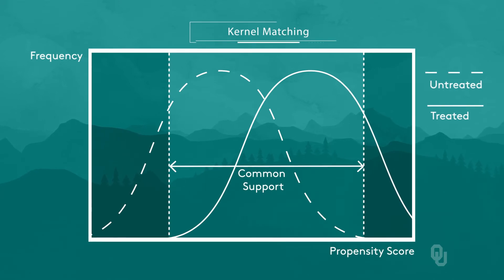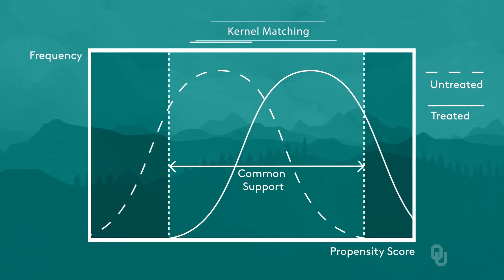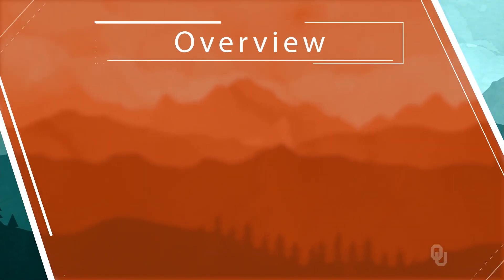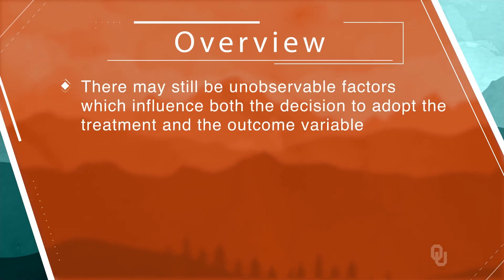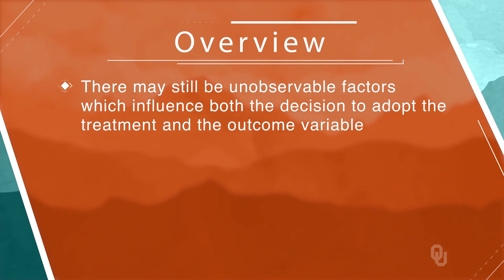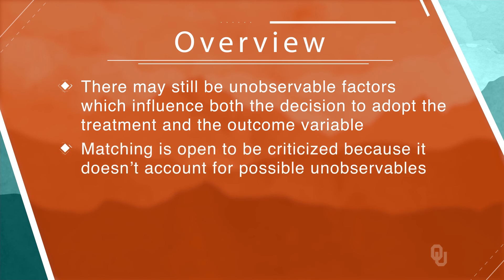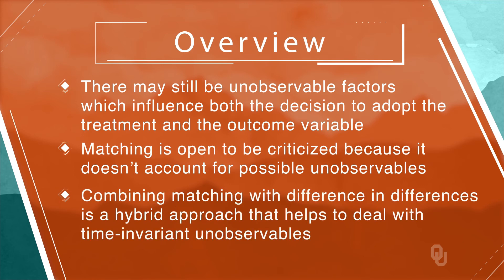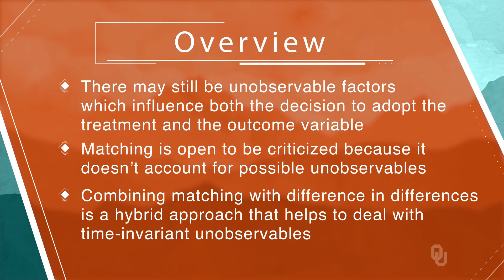We can also use matching with or without replacement. Nearest neighbor matching with replacement means that a non-treated unit could be used as the matched control for multiple treated units. Even if we do everything right, though, we may still be worried that there are unobservable factors which influence both the decision to adopt the treatment and the outcome variable. Since we can only match on observables, matching is open to criticism because it doesn't account for possible unobservables. However, combining matching with difference-in-differences is a hybrid approach that helps to deal with time-invariant unobservables.